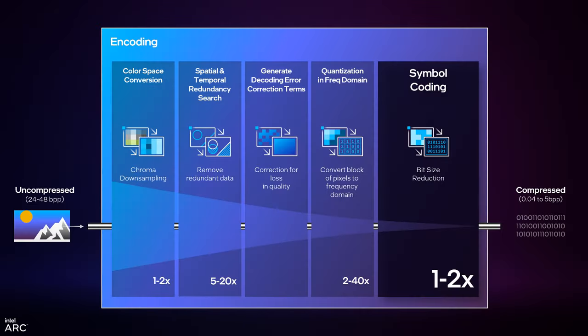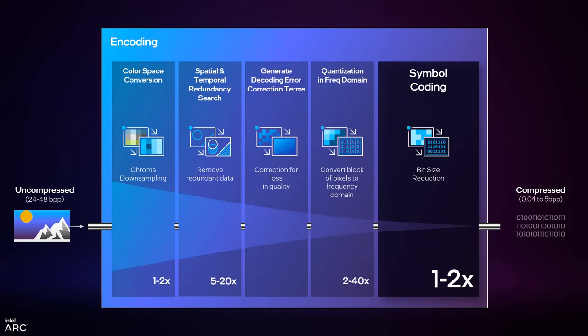The last step is symbol coding — effectively the same thing that happens when you zip a file. It's called prefix coding, sometimes using a method called Huffman coding, invented at MIT in 1952. It uses run-length coding: how often does a particular pattern appear? We give that a special short code — like '10' means five zeros, or '13' means ten ones. You compress the amount of repeated information, reducing storage by up to 2x. Completely lossless — exactly like zipping a file.